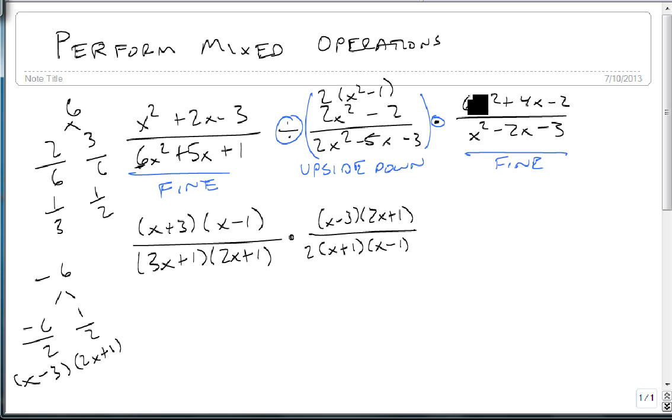For our last one, notice that first of all, 6, 4, and 2 all have a 2 that goes into them. We get 3x² + 2x - 1. Factors of -3 that add up to 2 are 3 and -1. Divide those by 3 and we get 3x - 1 and x + 1. On bottom, we have the opposite. We have -3 that adds up to -2, so that's going to be x + 1 and x - 3.